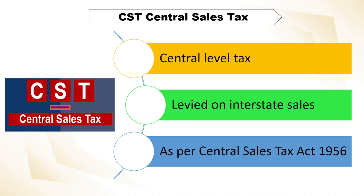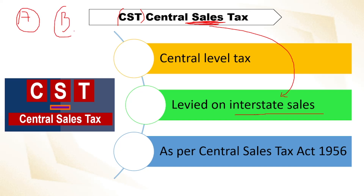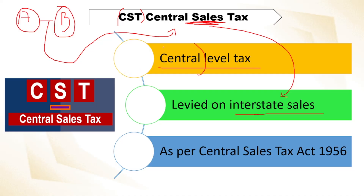Next is CST, which means Central Sales Tax. It is levied on sales — but what kind of sales? Interstate sales. So if there is State A and State B, and any sales happen between these two, then CST will be imposed on such type of sales. This is a central level tax, controlled by the central government, and is governed as per the Central Sales Tax Act of 1956.